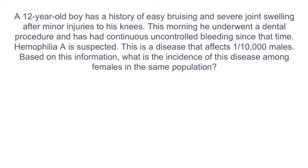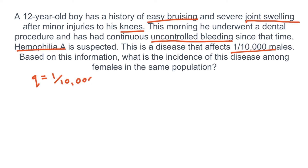A 12-year-old boy has a history of easy bruising and severe joint swelling after minor injuries, and has had continuous uncontrolled bleeding after a dental procedure. Hemophilia A is suspected — an X-linked recessive disorder that results in easy bruising, uncontrolled bleeding after trauma or surgery, and bleeding into the joints. The incidence in males is 1 in 10,000. Based on this information, what is the incidence among females in the same population? Because males only have one X chromosome, Q equals 1 over 10,000.